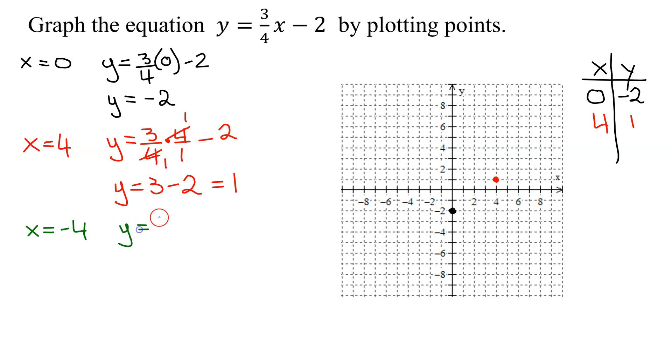So y equals three-quarters times x. x is negative 4 over 1 minus 2.